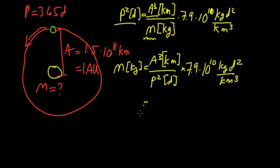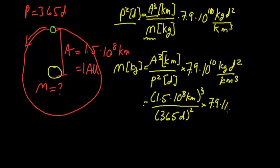Alright, so we plug in the values for these, so we end up with 1.5 times 10 to the 8 kilometers. This quantity is going to be cubed. We have 365 days. This quantity is going to be squared. And then we have the constant, 7.9 times 10 to the 10 kilogram day squared per kilometer cubed.